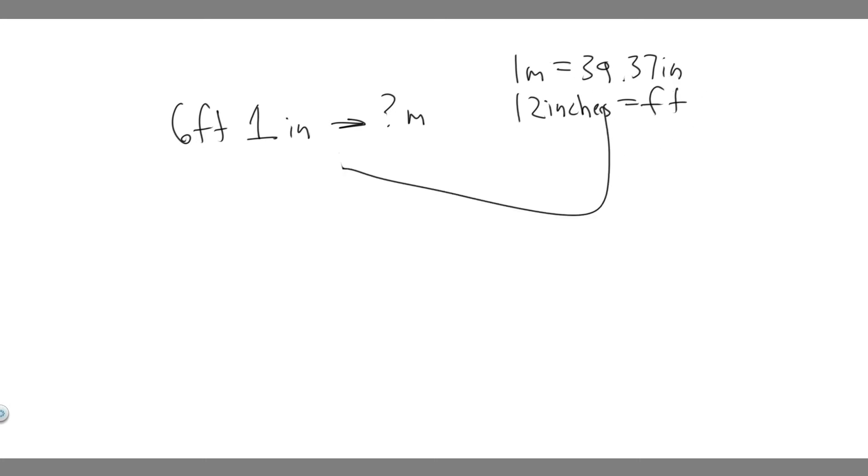And so what we want to do first is notice what we have. We have two units. We have feet and inches. And then we want to convert to meters. So what we're going to do is convert this value into one unit. So we're going to make it solely inches. And then we know how many inches there are for a meter. And we can just convert into meters.